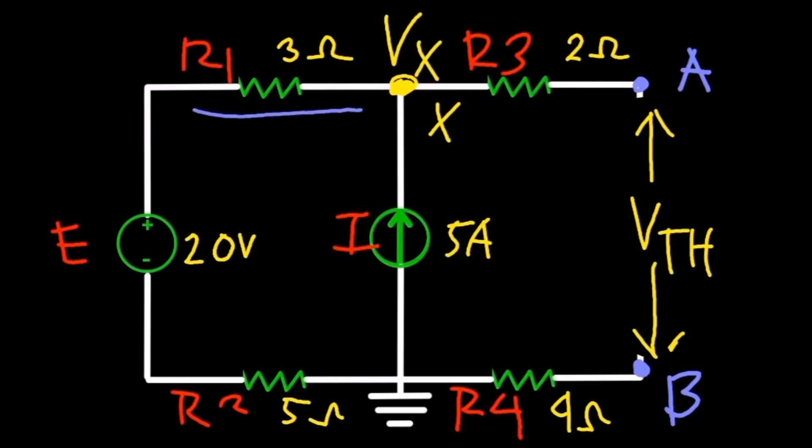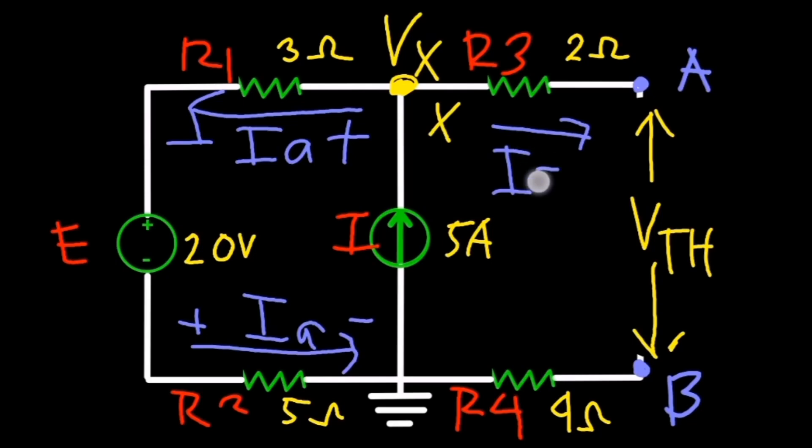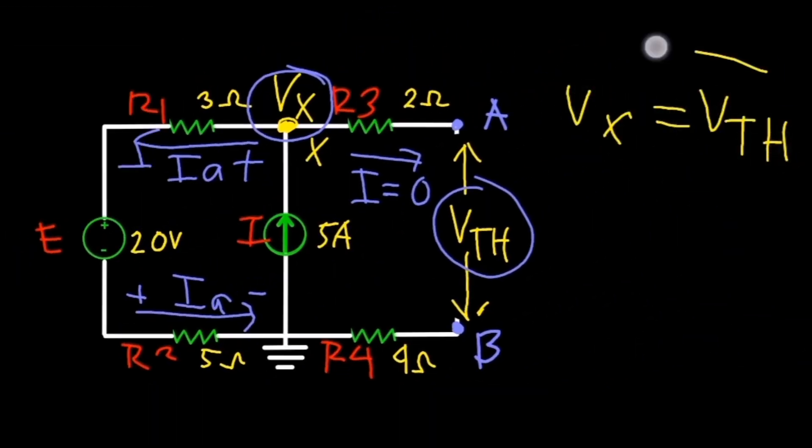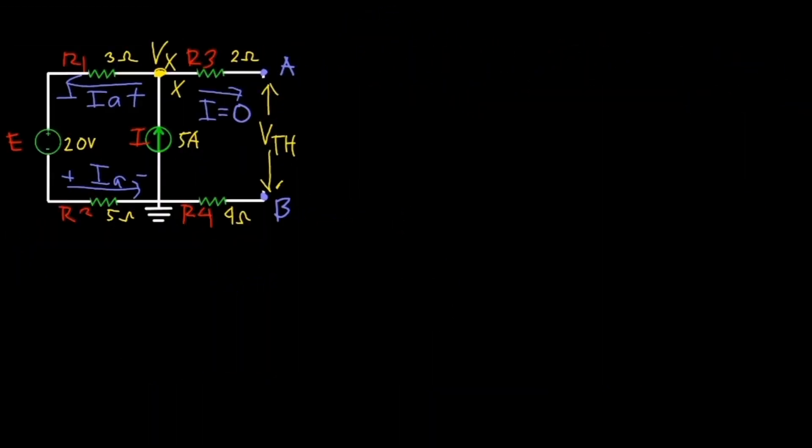At R1 and R2, which is the same direction as the current source, which will be denoted as Ia. There is no current flowing to R3 and R4 since it is an open circuit, so it means that Vx is equal to the Vth at point A and B. Right after that, we can now use Kirchhoff's voltage law KVL.